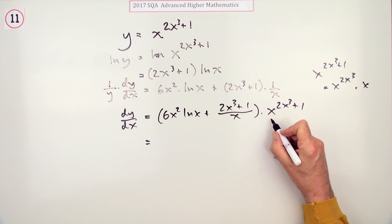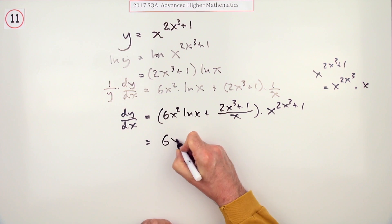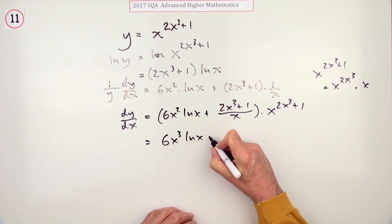So you can tidy this bit up by taking this x, so I'm just left with x to the 2x cubed, by taking this x and multiplying the bracket by it, which will remove that awkward denominator. It bumps that up. That now becomes 6x cubed ln x.